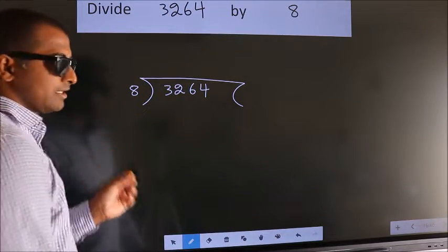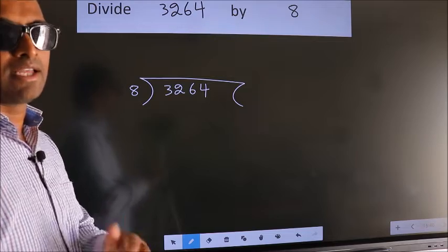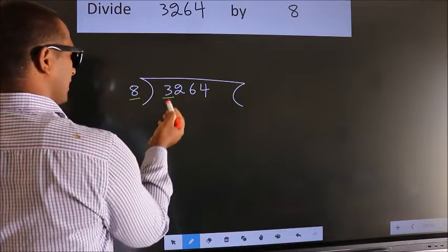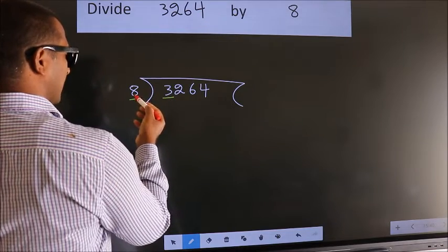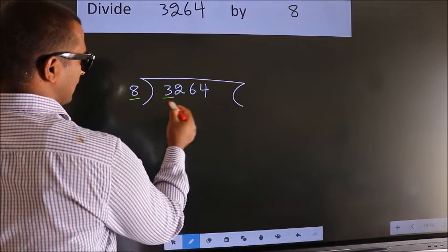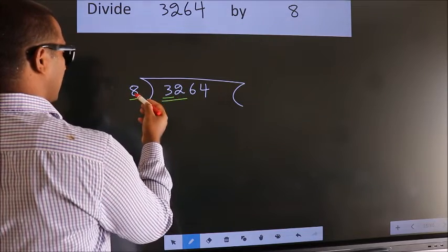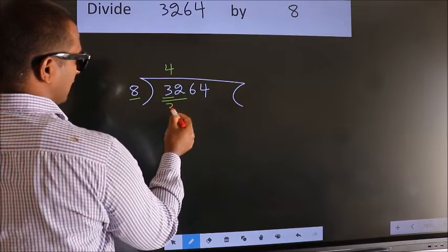This is your step 1. Next, here we have 3. Here 8. 3 smaller than 8. So, we should take 2 numbers, 32. When do we get 32? In 8 table. 8 fours 32.